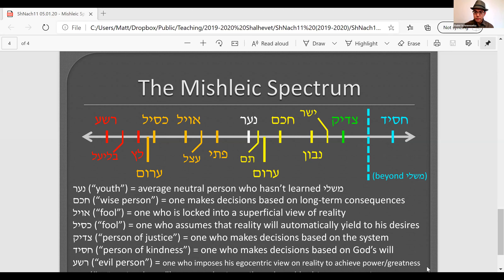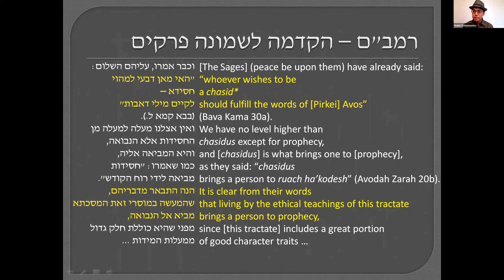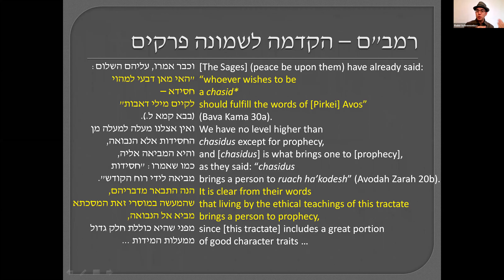According to Rambam's definition of a chasid, it could seem problematic to say it's generally good to add on to mitzvos. This will take us to a topic I was going to save for the week after next — how do you fit this type of chasidus with the rest of Torah? Like Leah said, you shouldn't add onto mitzvos. So what's the difference between adding onto mitzvos and doing this? Excellent question — I want to save it for two weeks from now, but we will get to that.